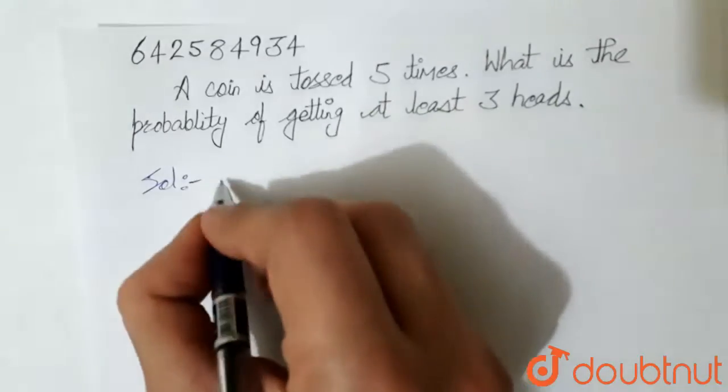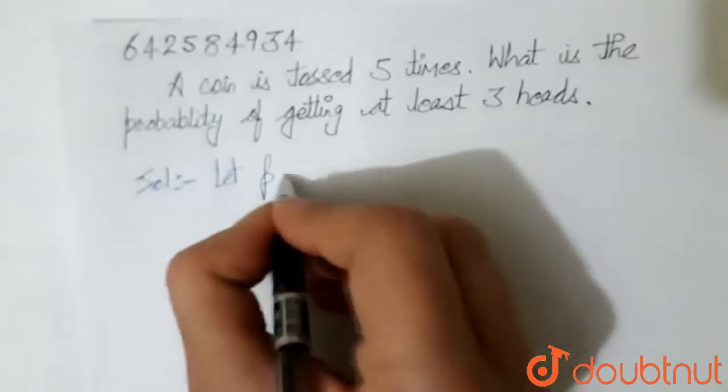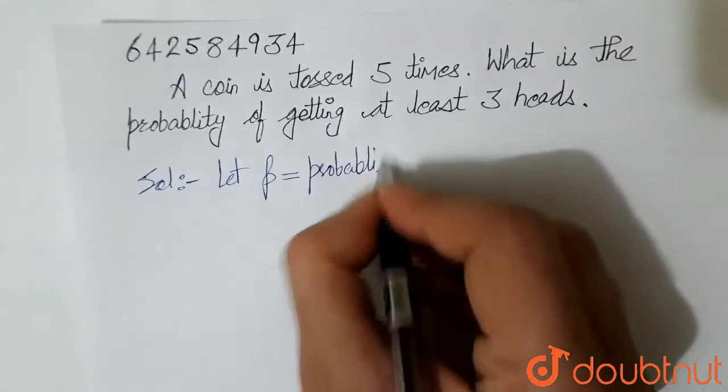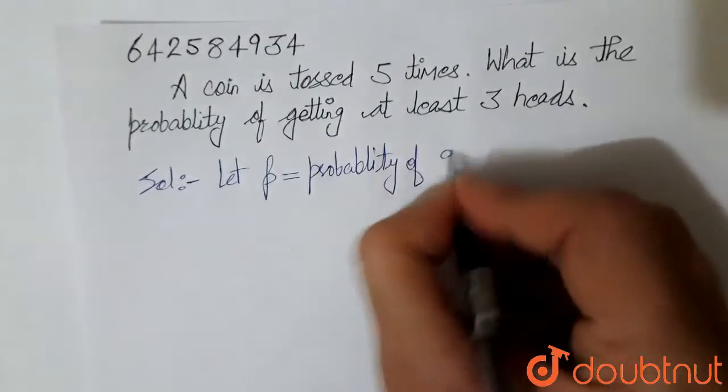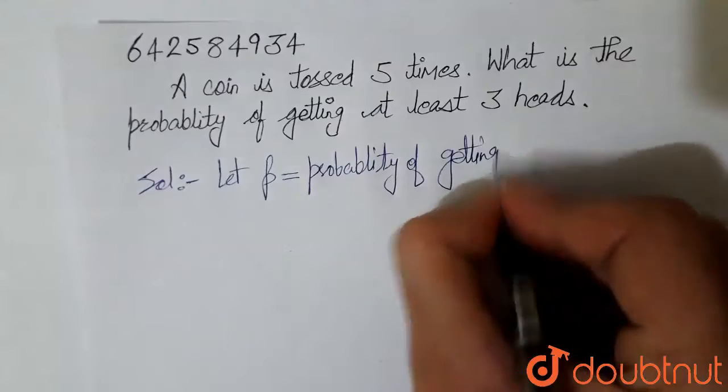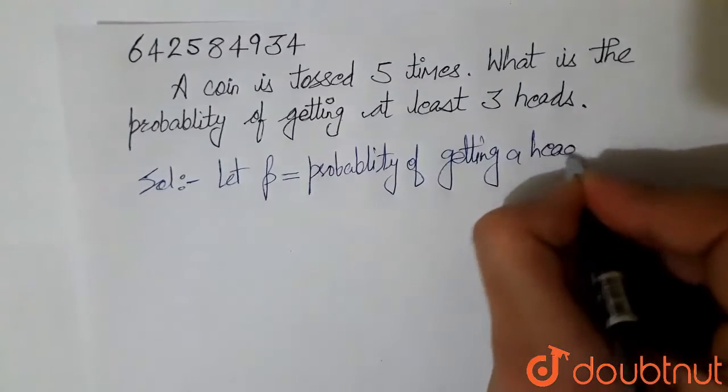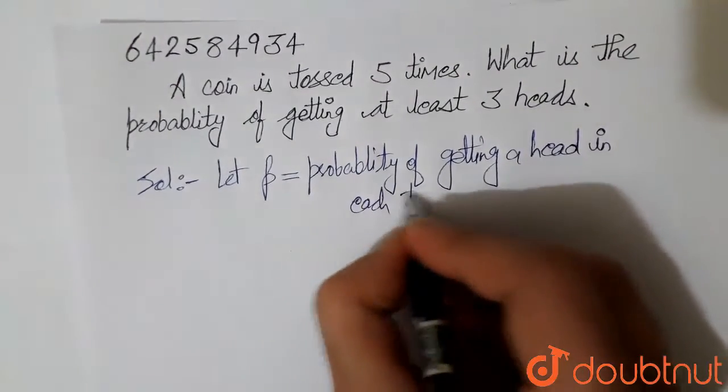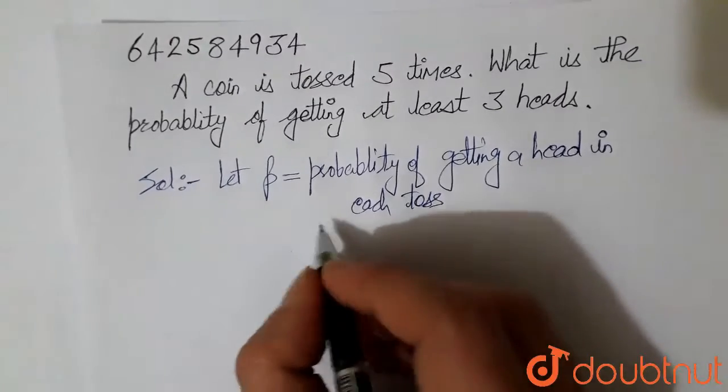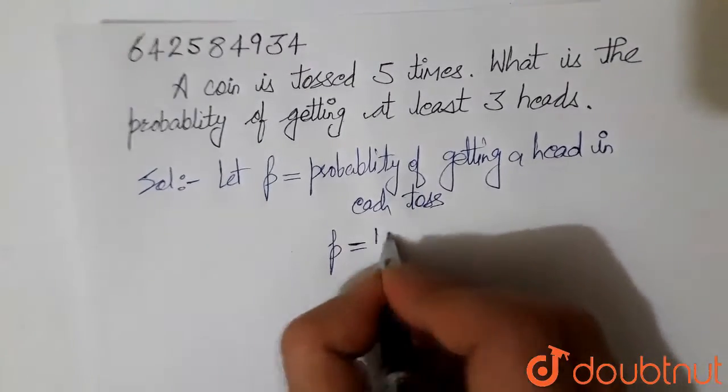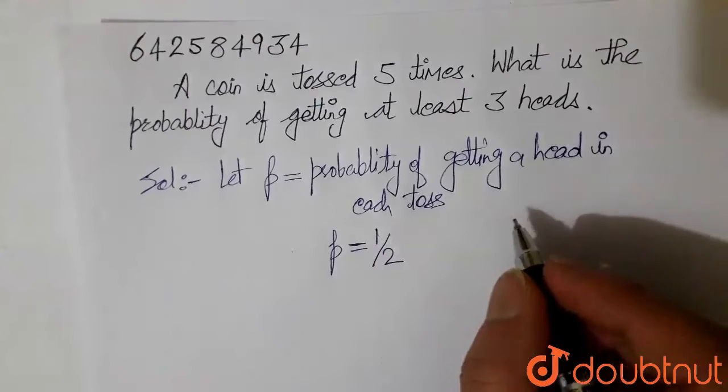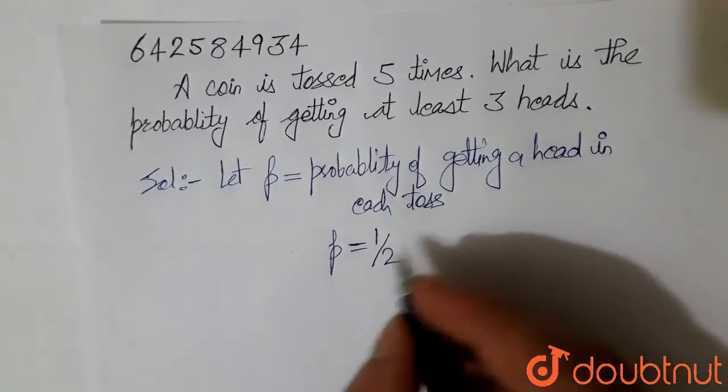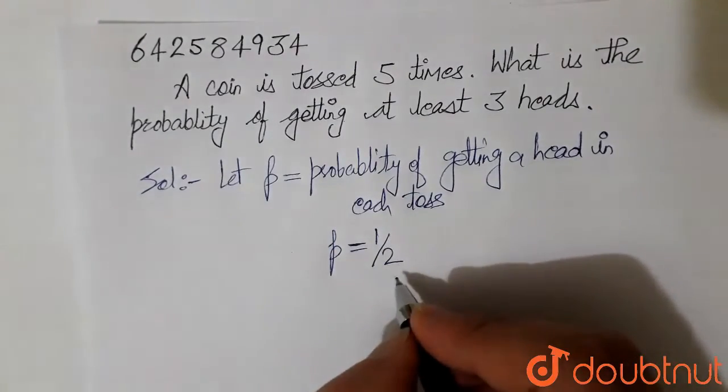Let p equal the probability of getting a head in each toss. So in each toss, probability of getting a head is 1 by 2, because a coin has two outcomes, head or tail, so both the probabilities are half.